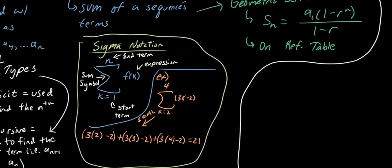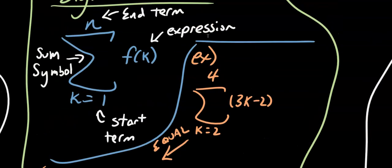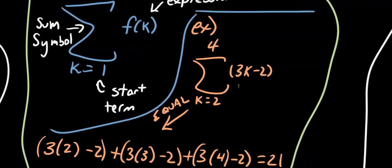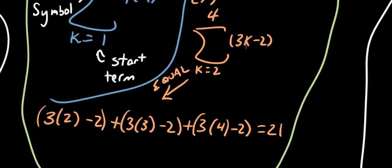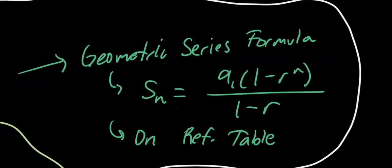Finally, we have sigma notation. We use the sum symbol to add up terms in a sequence, and you can use your calculator's sigma function to easily find the sum. In this example, the upper bound 4 means the last term is at n = 4, and 2 is the first term. We plug in n = 2, then 3, then 4, getting a final answer of 21. The geometric series formula is on your reference table — just plug in the same variables and it gives you your answer.